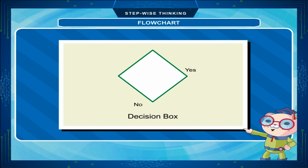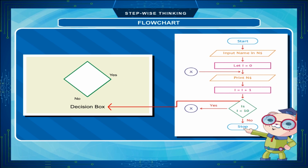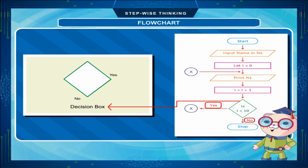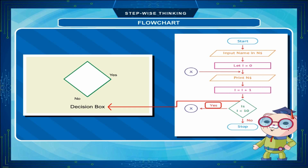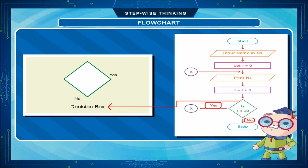Decision box: The decision box is shaped like a diamond. Decision making is done inside it. All types of comparisons between objects can be made in this box. For example, if you want to compare the age of two friends in a class, the statement written inside it would be: 'Is the age of the first friend greater than the age of the second friend?' Therefore, this box purely gives the decision between two or more objects.